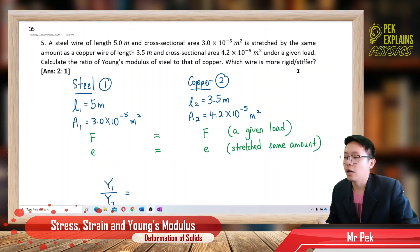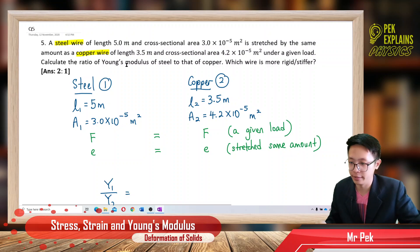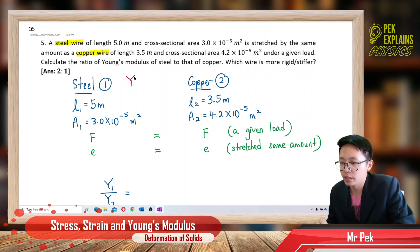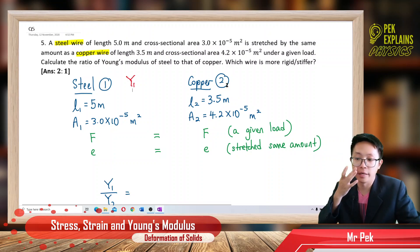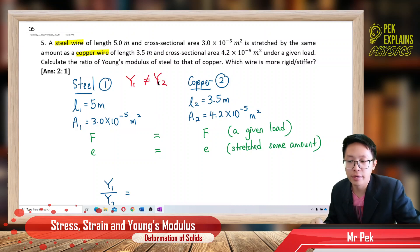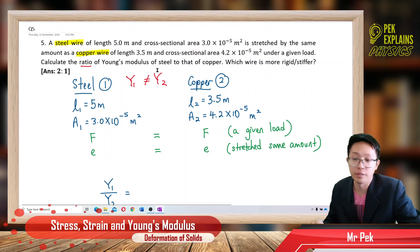We have two types of material: one is steel wire, one is copper wire. So they have different Young's modulus. Young's modulus for steel I label as 1, copper I label as 2. So Y1 is not equal to Y2 — different material, different Young's modulus. That's why we need to find the ratio between these two Young's moduli.